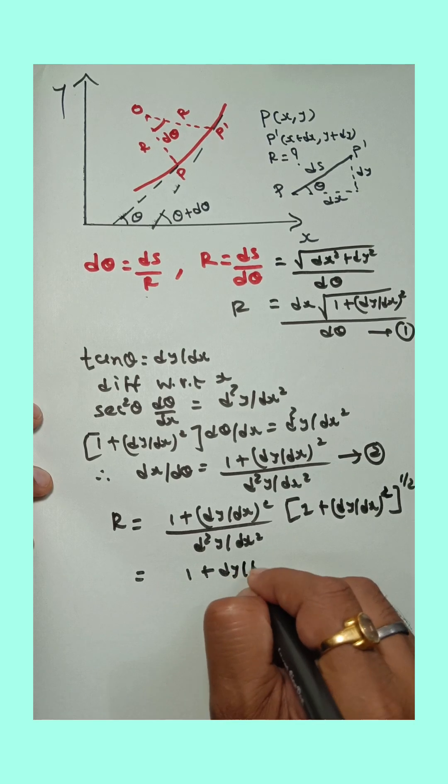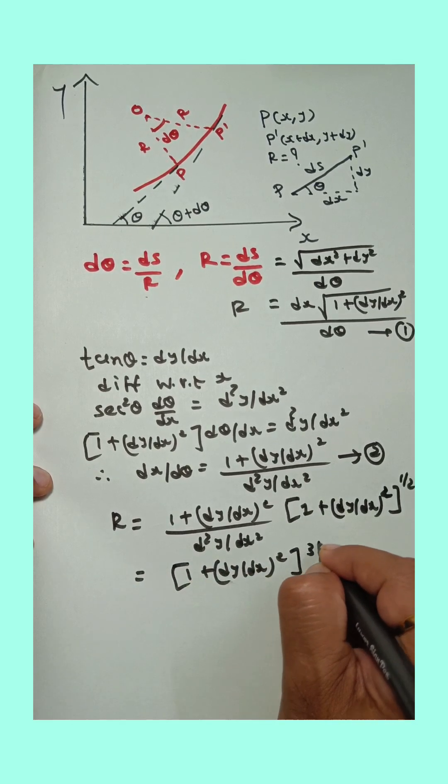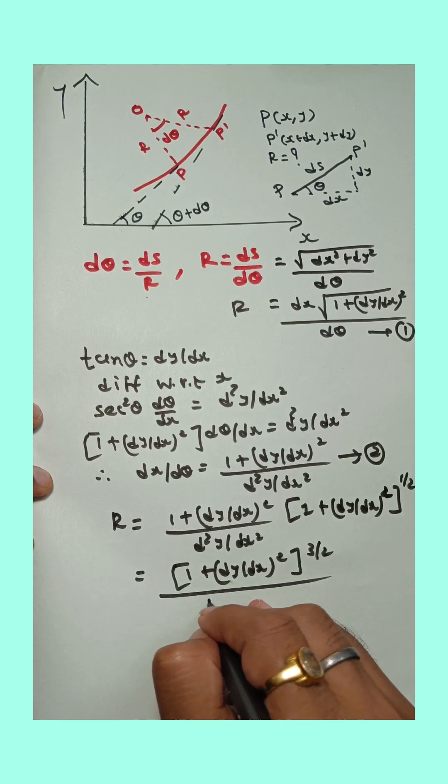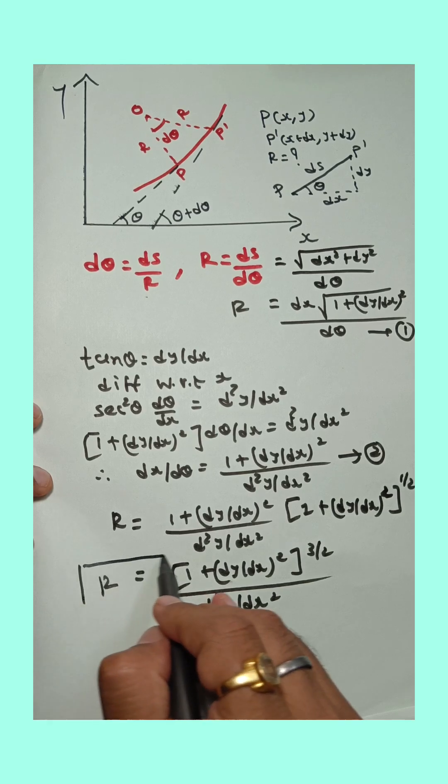So 1 plus dy upon dx square whole raised to 1 plus 1 by 2, 3 by 2, upon d square y upon dx square. That is the equation of radius of curvature.